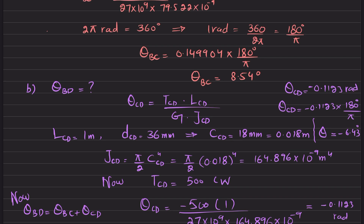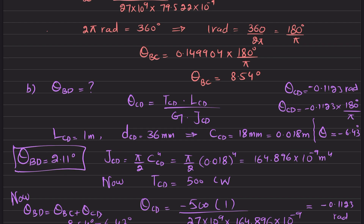Now, theta_BD equals theta_BC plus theta_CD, which is 8.54 degrees plus (-6.43 degrees), giving theta_BD = 2.11 degrees. This is the answer to the second part.